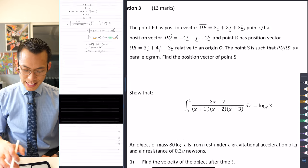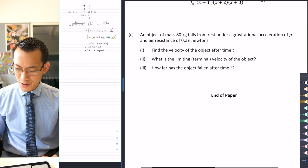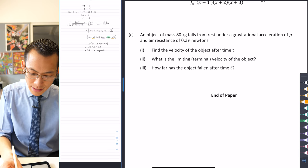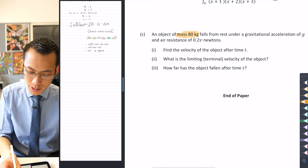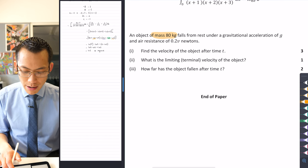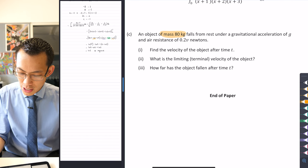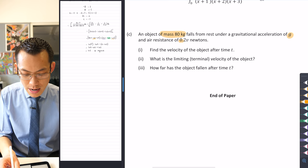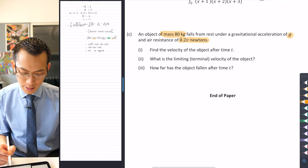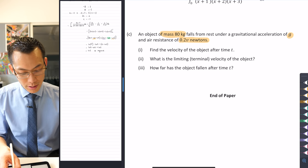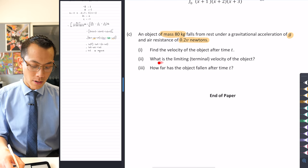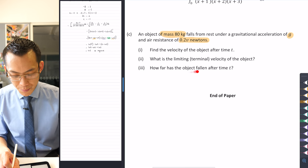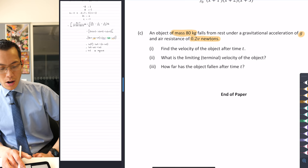Okay final question, let's have a look at this one together. It's going to be mechanics. An object of mass 80 kilograms falls from rest under gravitational acceleration of g and air resistance of 0.2v newtons. Find the velocity of the object after time t, find the limiting or terminal velocity of the object, and find out how far has the object fallen after time t.